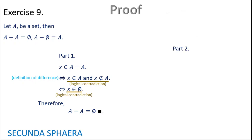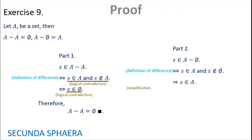For part two: starting with S in (A without the empty set), using the definition of difference, this is if and only if S is in A and S is not in the empty set. By simplification, S is in A. By the definition of the empty set, it is always true that S is not in the empty set, so we can introduce the conjunction and go backwards. Therefore, A without the empty set is equal to A. This completes both parts of exercise 9.